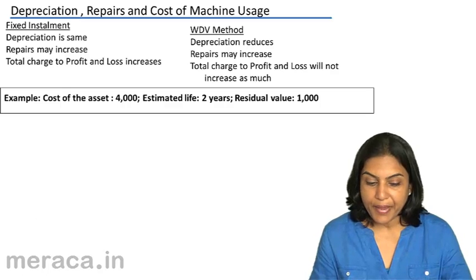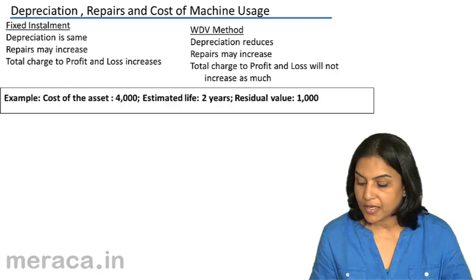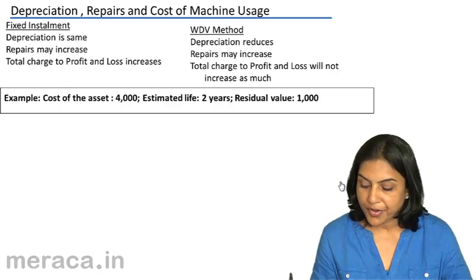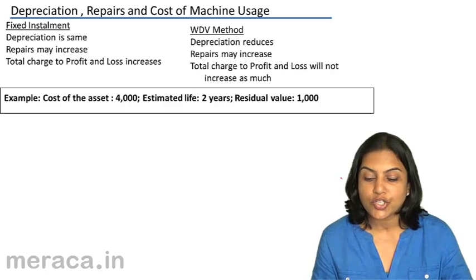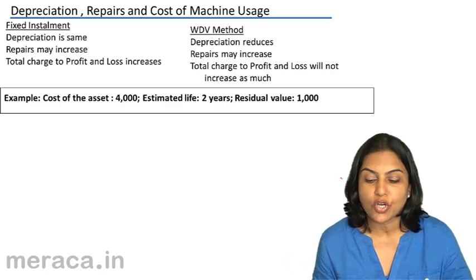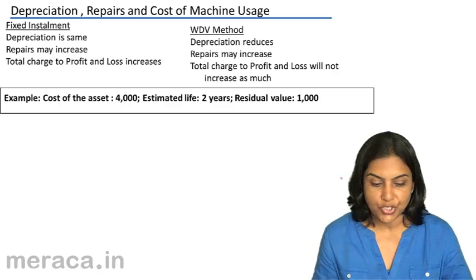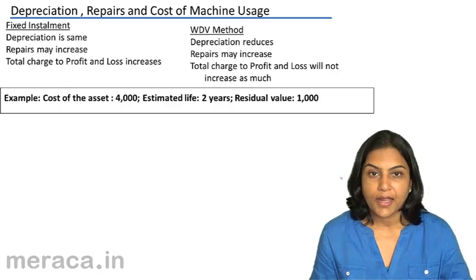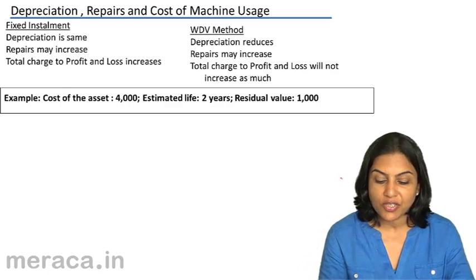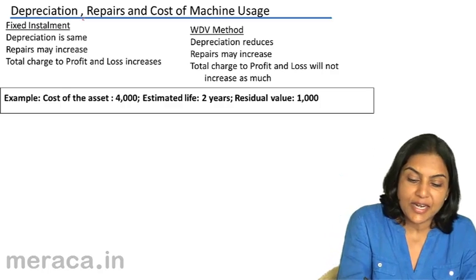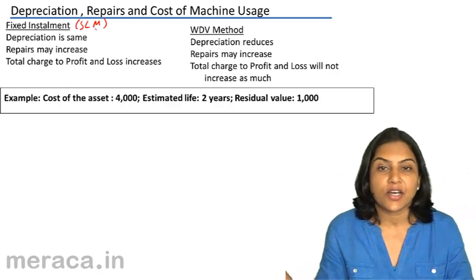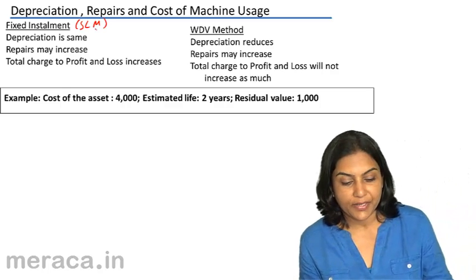Let us make a comparison of depreciation, repairs, and therefore the total cost of machine usage. We will compare the fixed installment or the SLM straight line method and the written down value method.